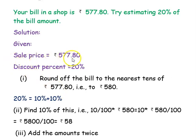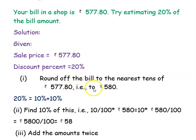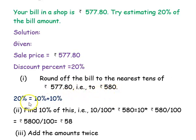The discount percent is 20 percent. First step: we round the bill amount. Rupees 577.80 rounded to the nearest tens gives rupees 580. The discount of 20 percent is split into 10 percent plus 10 percent.